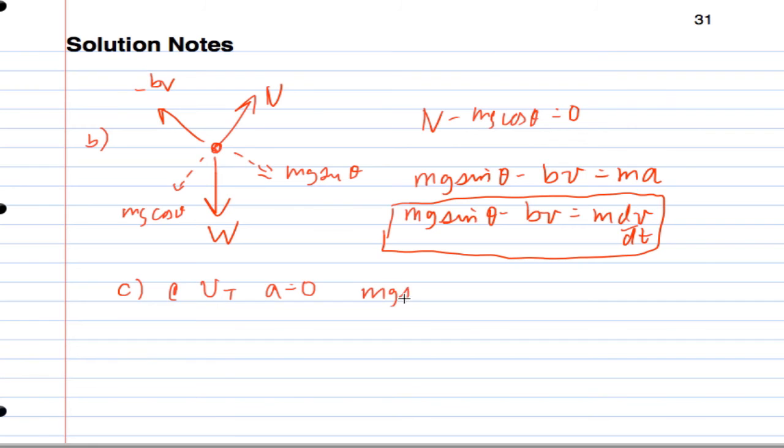So we're going to have Mg sine theta minus BV equals zero. And we're going to end up getting a terminal velocity equal to Mg sine theta over B.